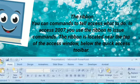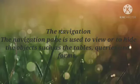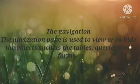At the top of the Ribbon are several tabs. Clicking a tab displays related command groups. Within each group are related command buttons. You click buttons to issue commands or to access menus and dialog boxes. You may also find a dialog box launcher. The navigation pane is used to view or hide objects such as tables, queries, and forms.